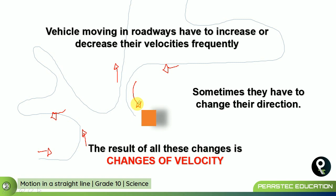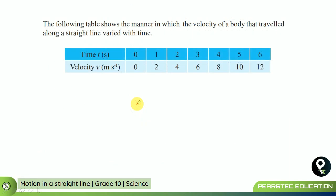The result of all these changes is changes of velocity. At the beginning, it was going with a different velocity. As it progressed, it was going with a different velocity. And when it came closer, it was going with a different velocity. The following table shows the manner in which the velocity of a body traveling along a straight line varied with time.